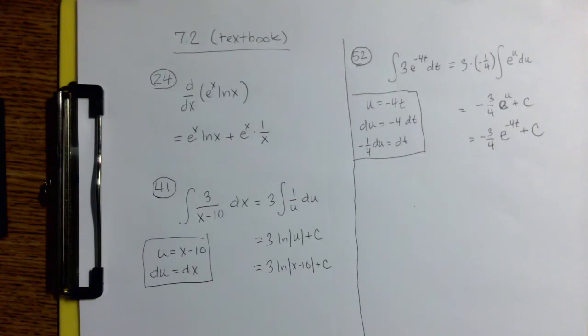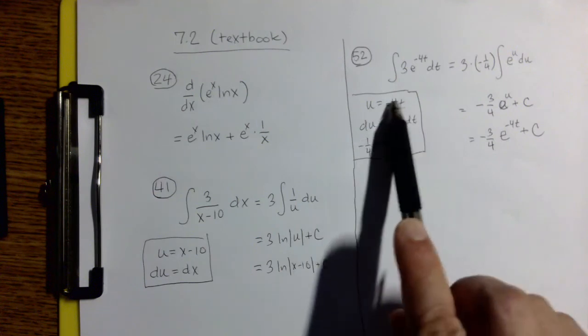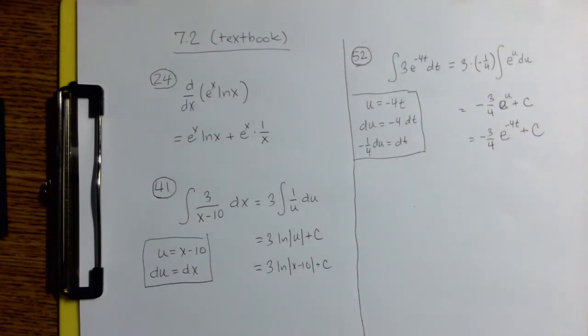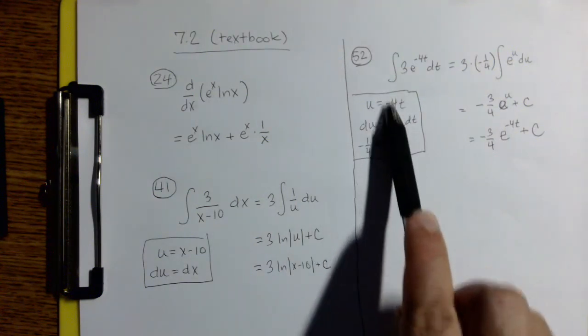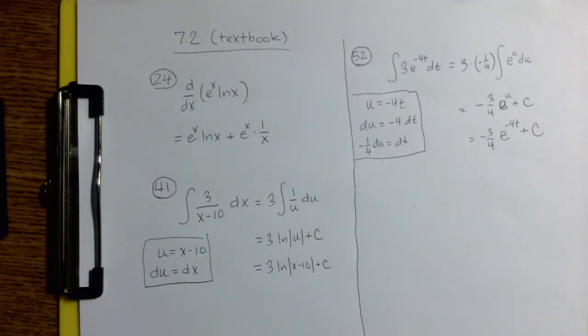Now, in order to evaluate that indefinite integral, we do want to use substitution as well because we have e to the negative 4t, not just e to the t. And as we do that, we see that we have that coefficient negative 4 that we have to account for.